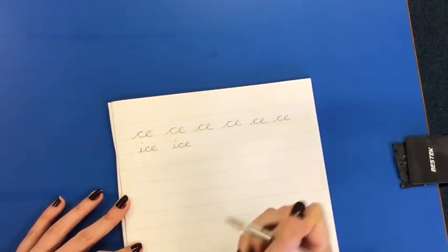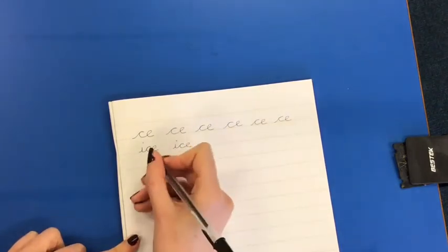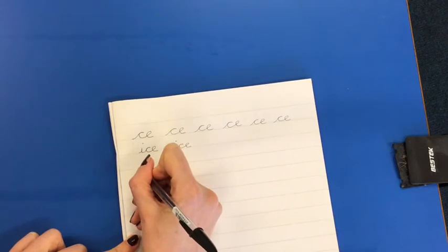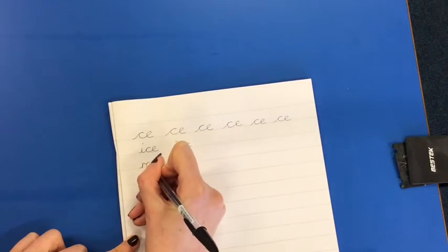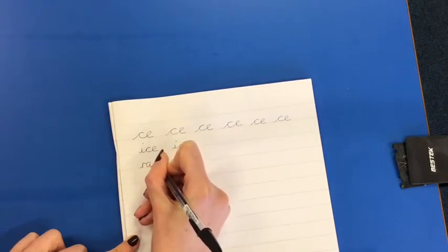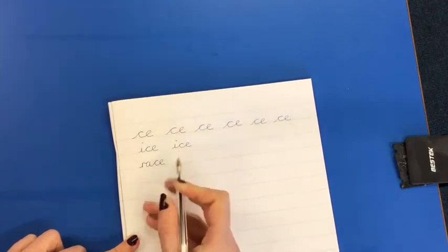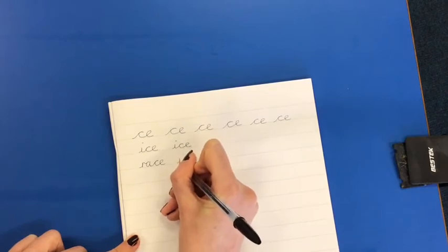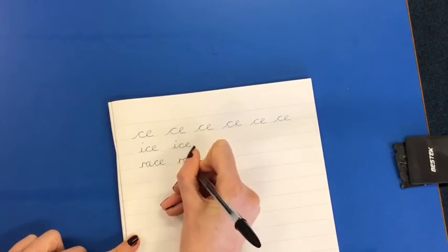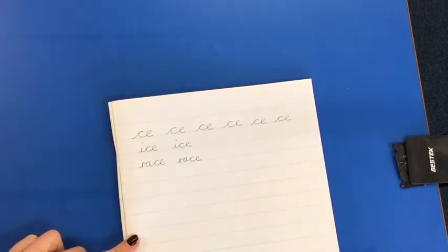On the line, carefully joining my r to my a. My c then joins from the bottom and there's my ce join, all the same size. And again, I could do a few more if I wanted to.